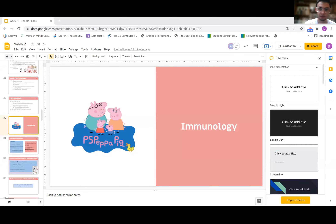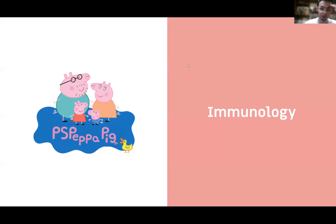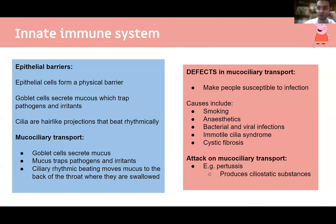Moving on to immunology, which supports understanding of the previous topics. The respiratory system is critically important in disease progression and prevention because you're constantly breathing in particles, irritants, and pathogens. The body has several defense systems: the physical barrier of the epithelium prevents pathogens from entering the bloodstream directly.